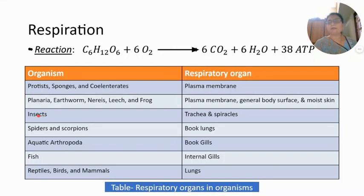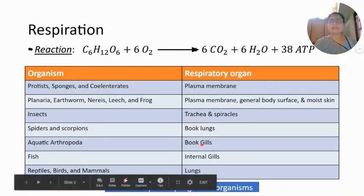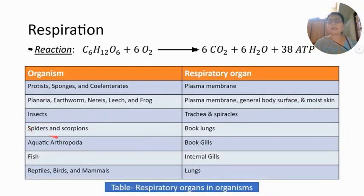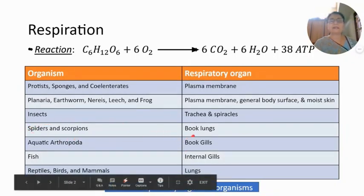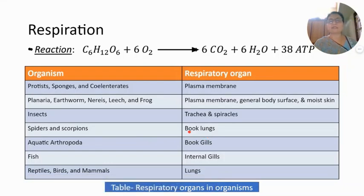In phylum Arthropoda, the class Insecta includes terrestrial insects living on land, which have trachea and spiracles as respiratory organs. Aquatic arthropod animals use book gills. Spider and scorpion-like arthropod animals have special respiratory organs called book lungs, which are used by spiders and scorpions.